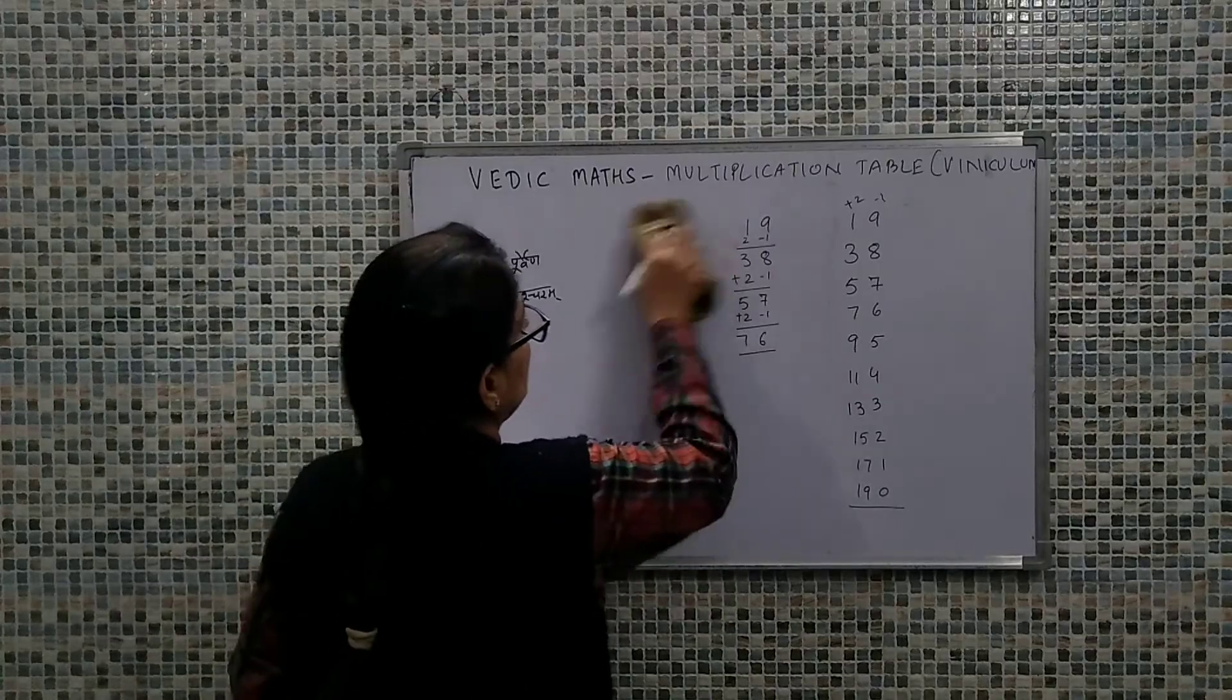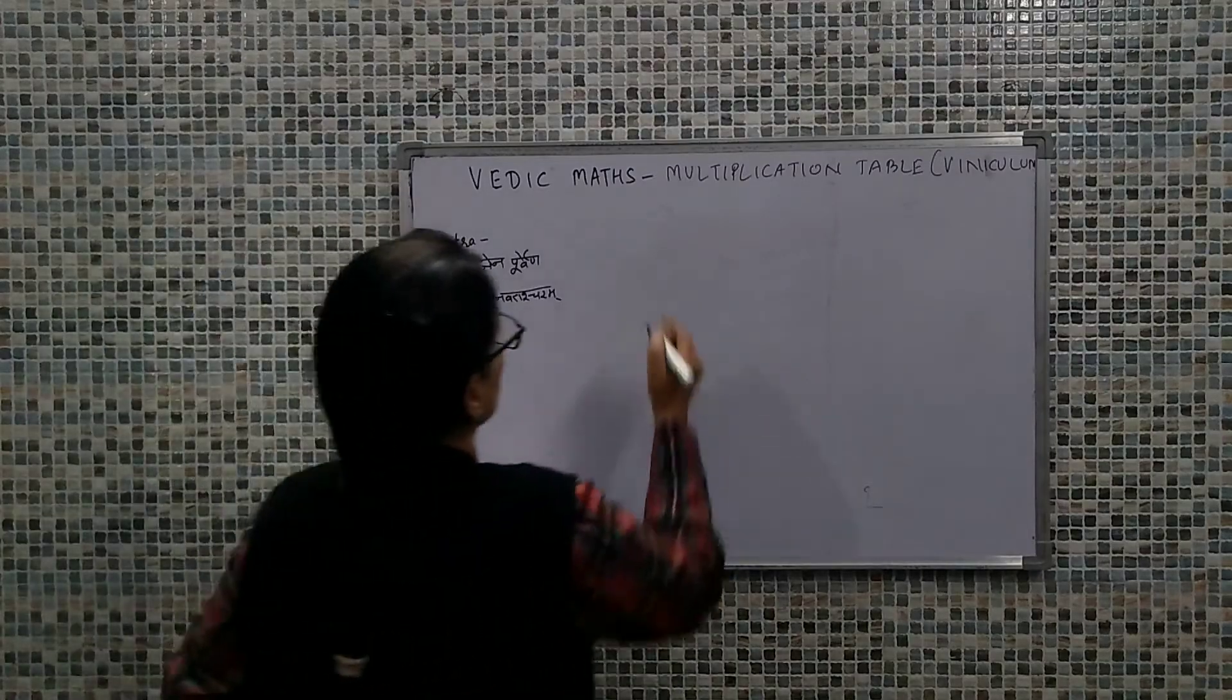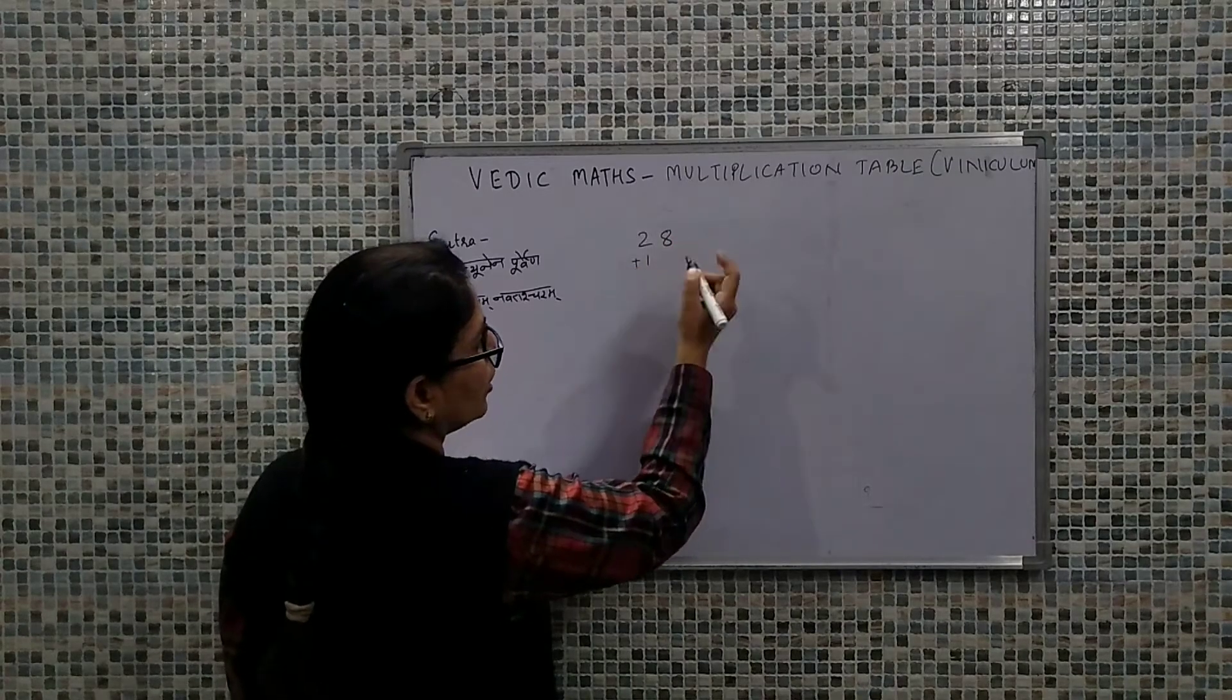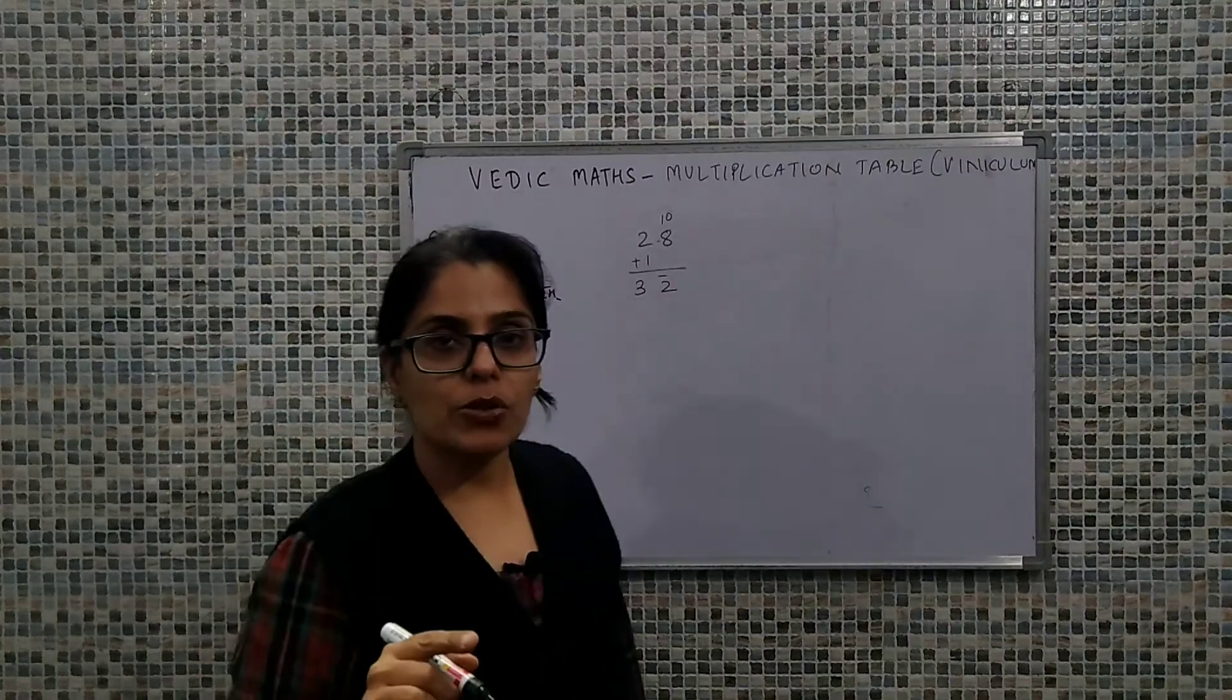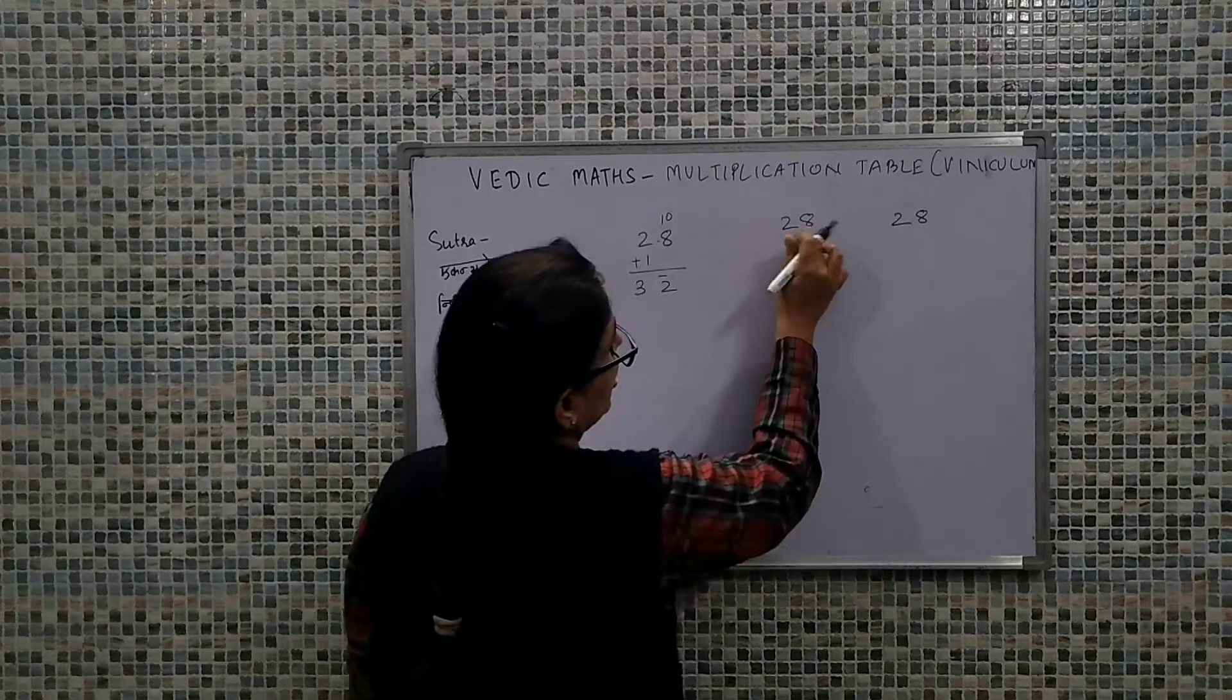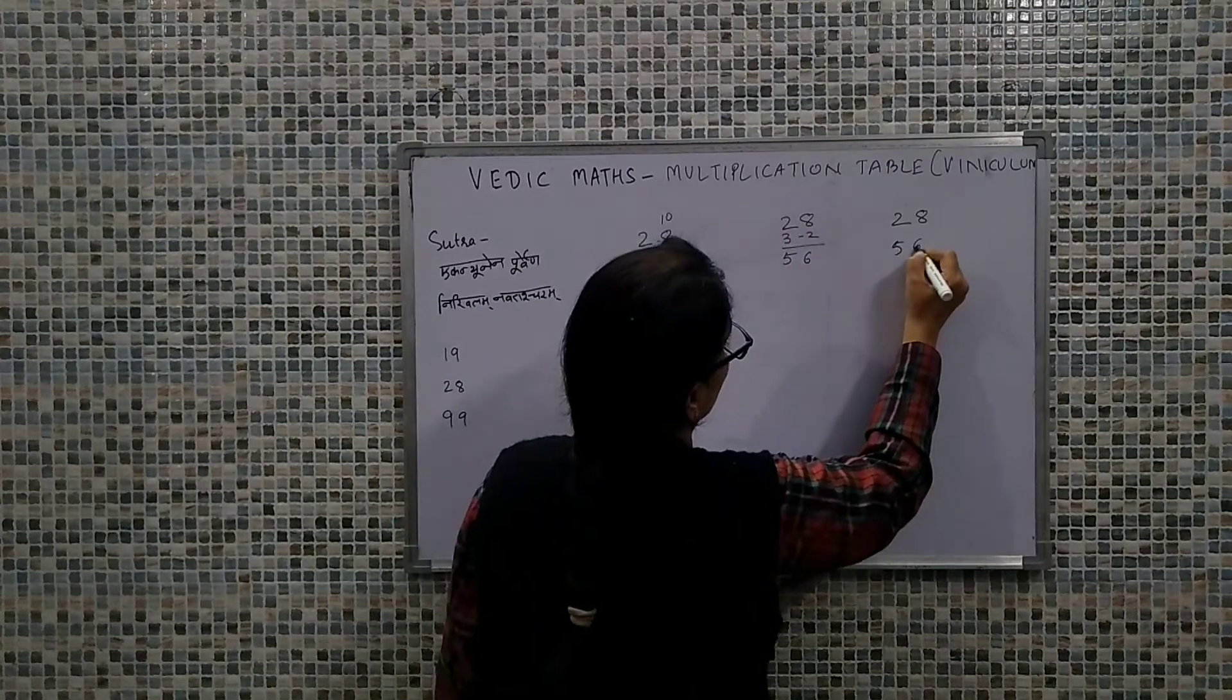I think it's fine with this example. Let's consider the next example as 28. This number has 8 which is greater than 5, so we will do Ekadhikena Purvena. So this will become 3 with bar and 2 with the bar. This means the tens place will be plus 3 and the ones place will be minus 2. So first we write the value 28, and here I'll show you the steps. This is our 28, here we did plus 3 and here minus 2. So 3 plus 2 is 5, 8 minus 2 is 6, so 56.